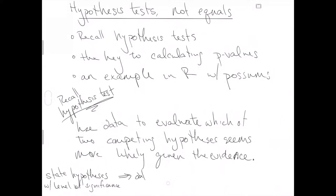So you've got to state your hypotheses and your level of significance up front. Then go collect data relative to those hypotheses. Then calculate a test statistic — and remember, the null hypothesis specifically is part of the test statistic calculation. With your test statistic, calculate a p-value, and with that p-value you can decide which of the two hypotheses seems more likely given your evidence.